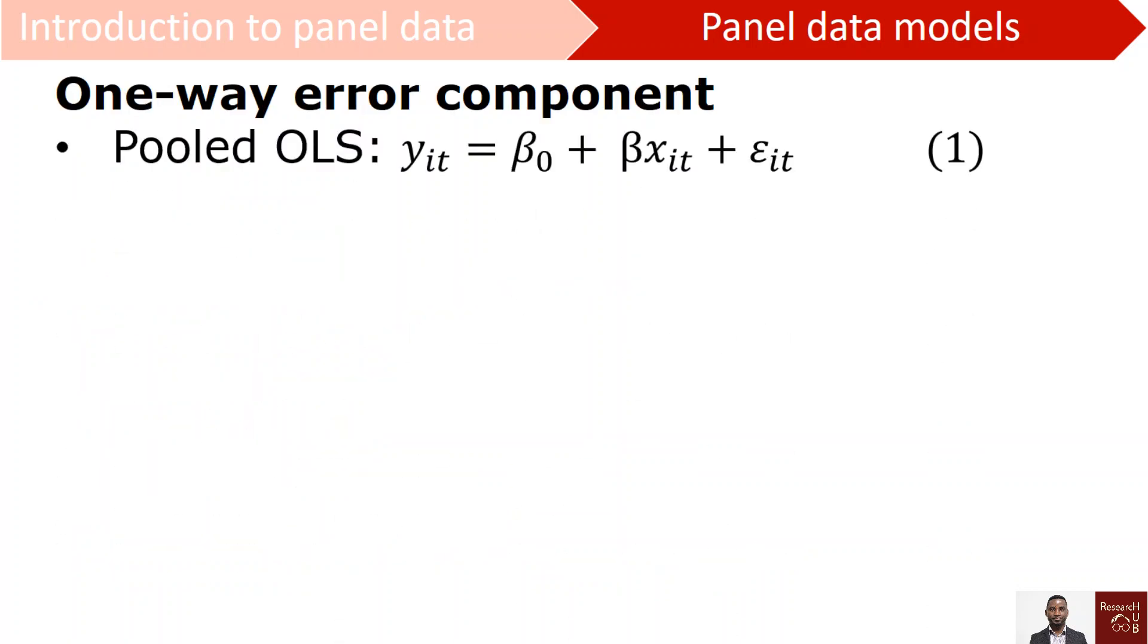Say we have a pooled OLS. In this way, we have our dependent variable for company i, where i is the company at time t.